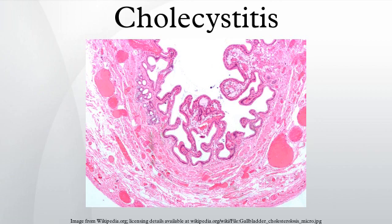Xanthogranulomatous cholecystitis is a rare form of gallbladder disease which mimics gallbladder cancer, although it is not cancerous. It was first discovered and reported in the medical literature in 1976 by J.J. McCoy, J.R., and colleagues.